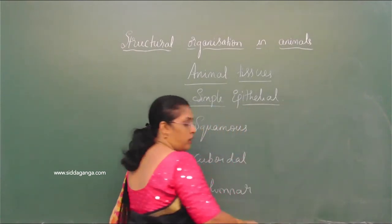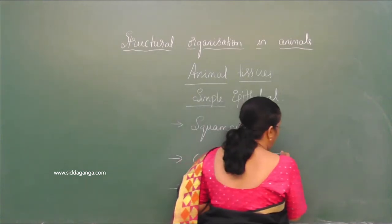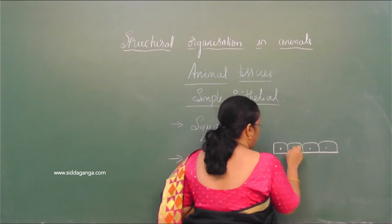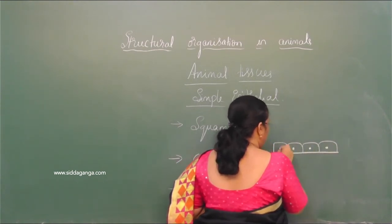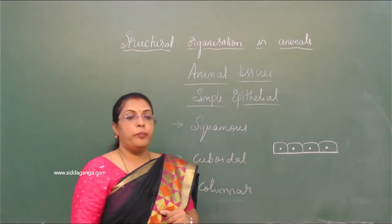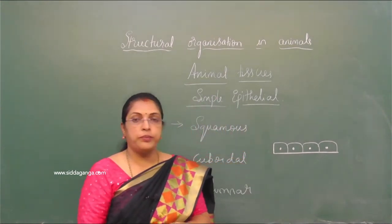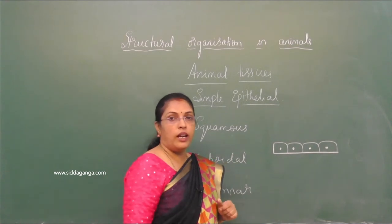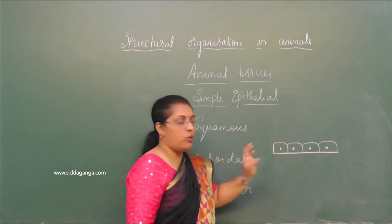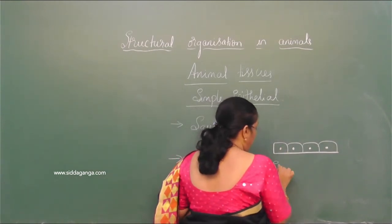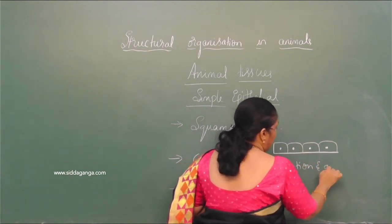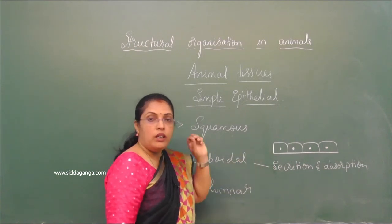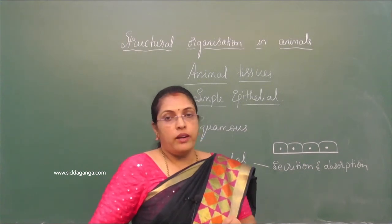Cuboidal epithelium: cells are cube-like structures lying on the basement membrane, circular with a round nucleus in the center. This cuboidal epithelium is seen in the lining of ducts and in the tubular parts of nephrons. Main function is secretion and absorption.